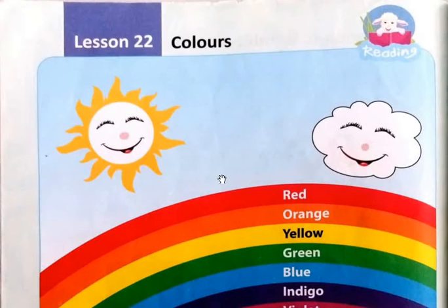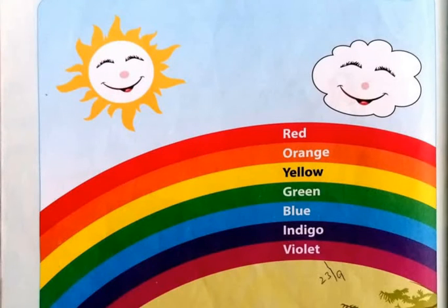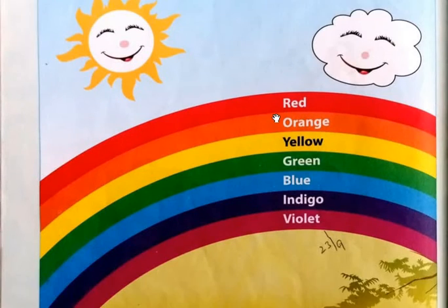Let me revise for you. First, revise the first seven colors name from your book page number 52. These are the rainbow colors. Let me revise.